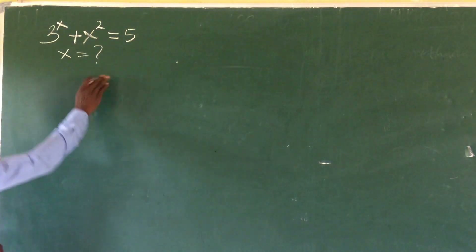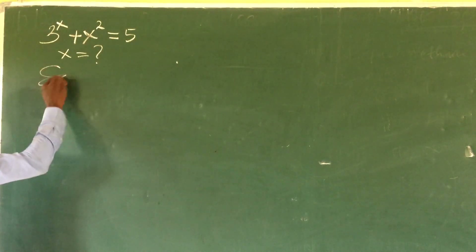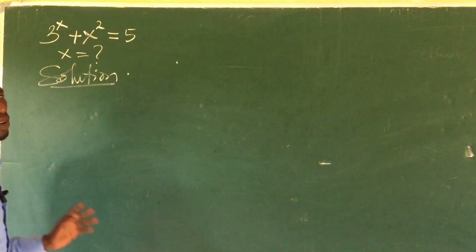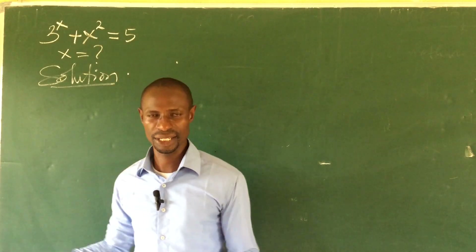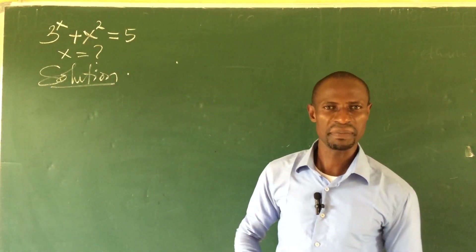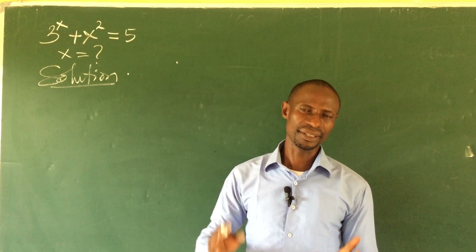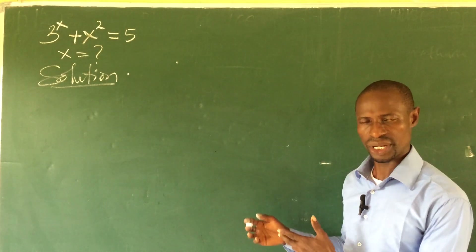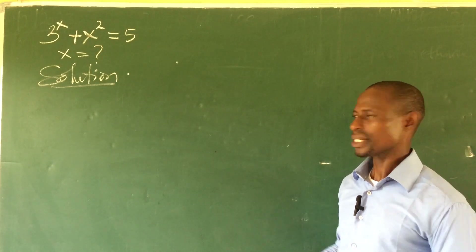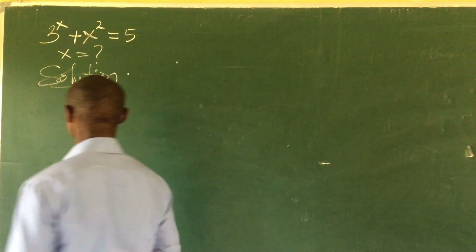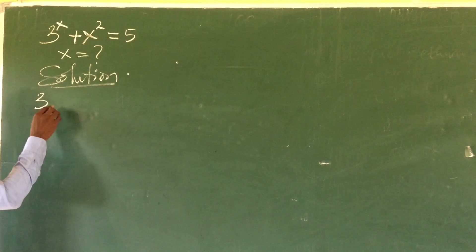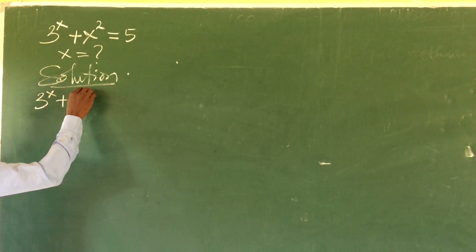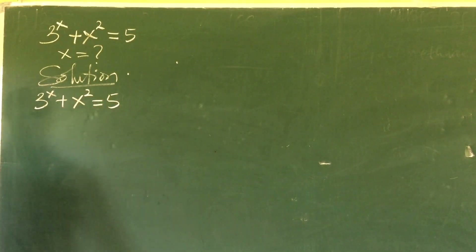Alright, so let's take the equation that I have. Now before we proceed, if you're new to this channel, kindly subscribe and turn on the bell notification button so that you get notified whenever we drop a wonderful video. So let's take our equation. We have 3 to the power of x plus x to the power of 2 equal to 5.